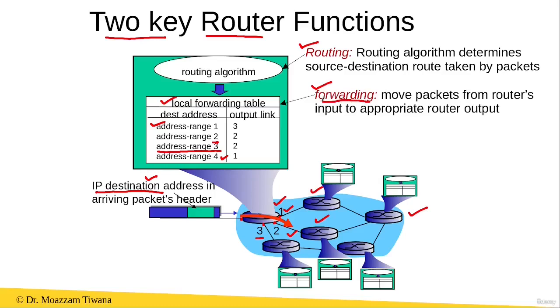Now the next question that arises is: how are these routing tables built? These routing tables are built using the routing algorithm. The routing algorithm determines what source-to-destination path is taken by an IP packet as it passes through routers in the internet.